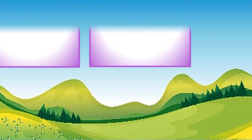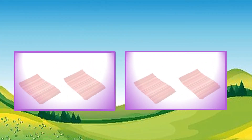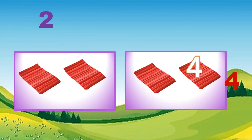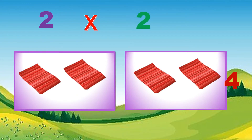Two sets of two is four. Let's do the skip counting: two, four. Two times two equals four.